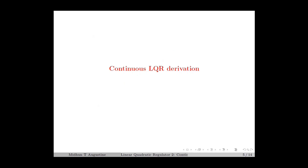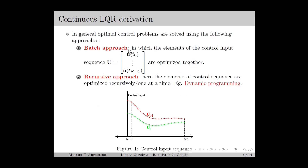Next, we move on to the derivation of continuous LQR. In general, optimal control problems are solved using two approaches: the batch approach, also known as the iterative approach, in which the elements of the control input signal or sequence are optimized together; and the recursive approach, in which the elements of the control sequence are optimized recursively, one at a time.